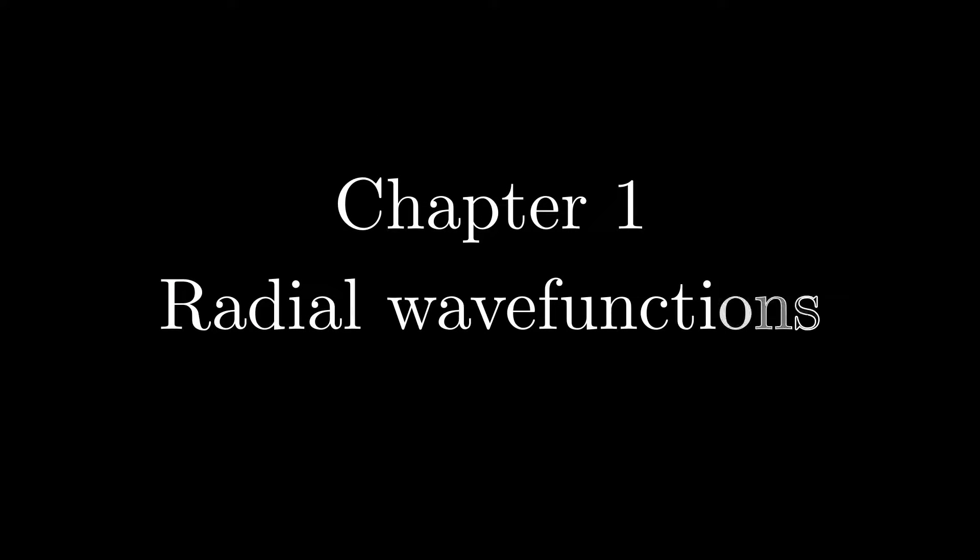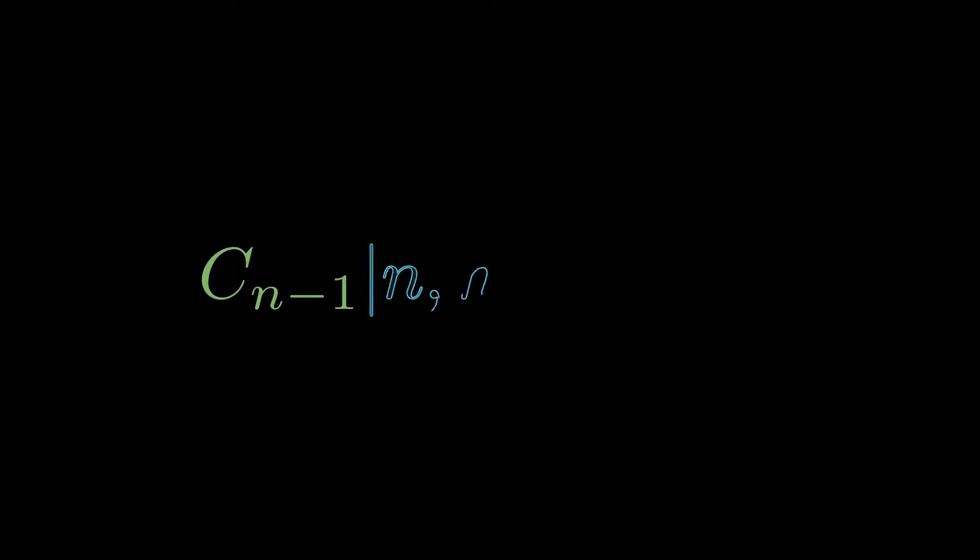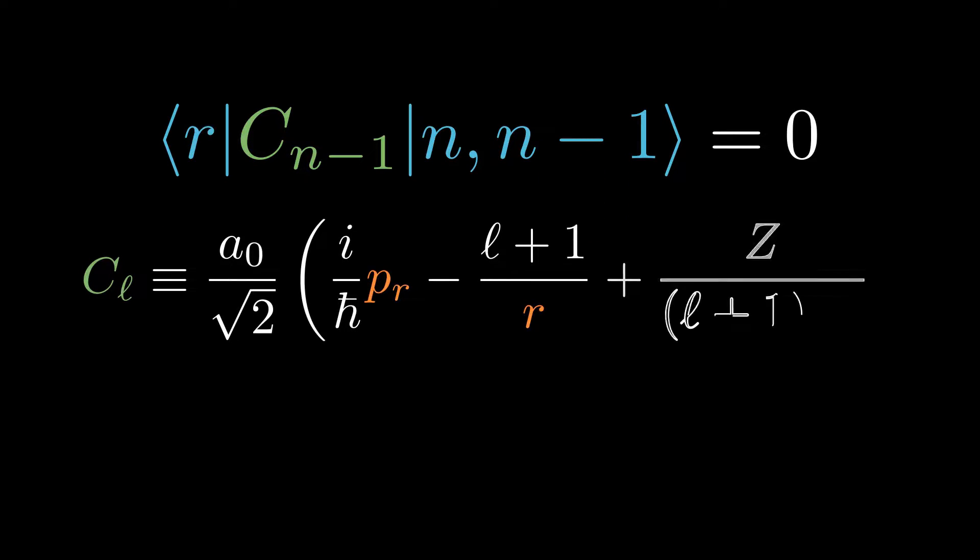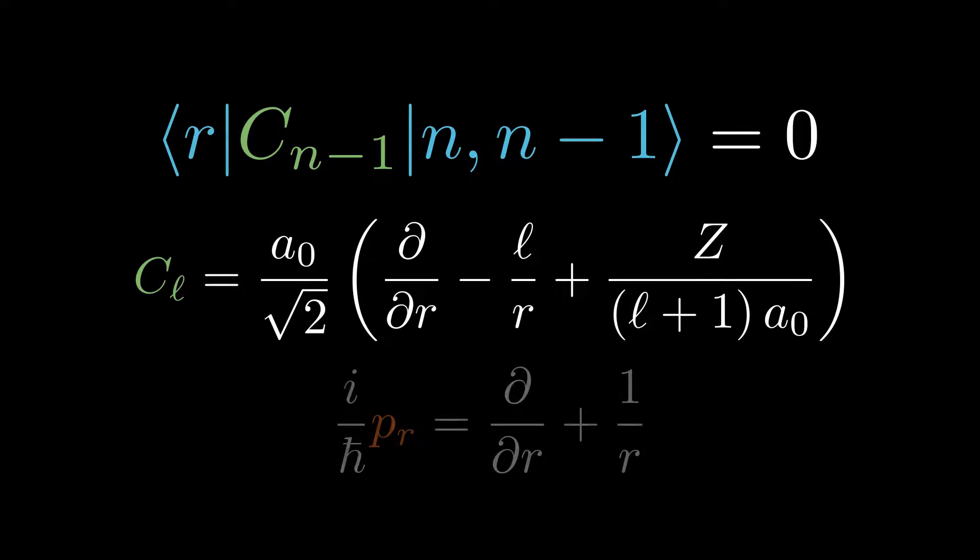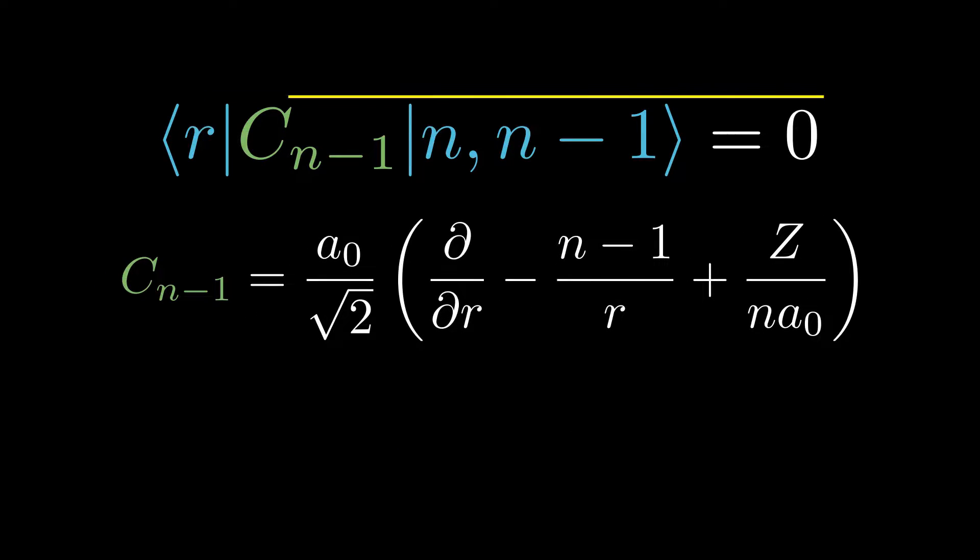We shall begin with the radial wave function. To work out the radial wave functions we'll first write down the state that's been annihilated by the circularization operator C_l then casting the equation into the position representation. The radial momentum operator in position representation is displayed on the screen. Turns out this is a linear first order ODE. We can solve it by separation of variables.